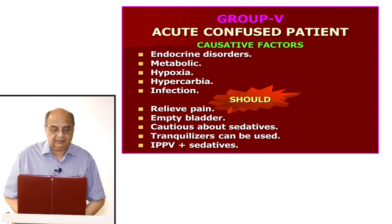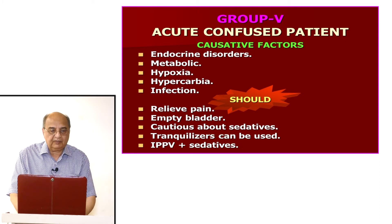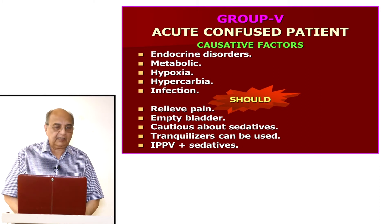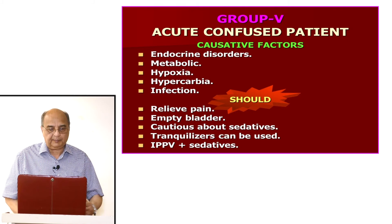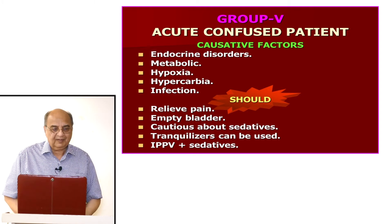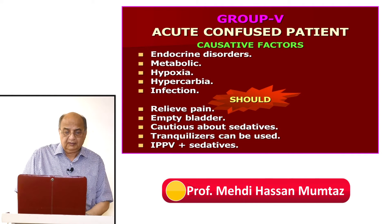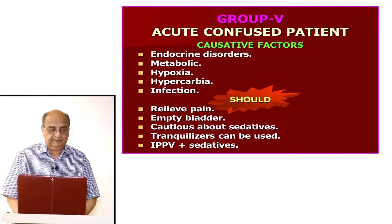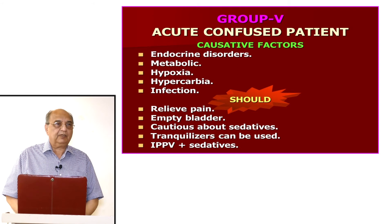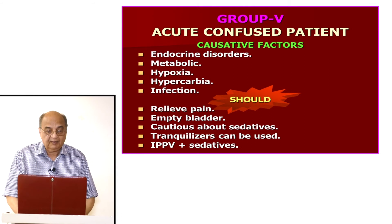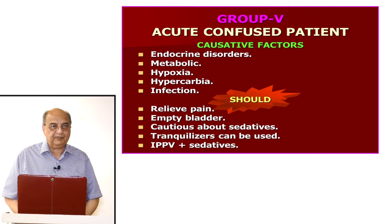Group five is acutely confused patients. Many patients in the ICU are already confused. The causative factors include endocrine disorders, metabolic disorders, hypoxia, hypercapnia, and infection. You must look for the causative factor — ask yourself why the patient is confused. Relieve pain if they are in pain, empty the bladder if needed, as this is a common cause of confusion and restlessness. Be very cautious about sedatives: find the causative factor first, then give sedative agents.